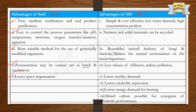The advantages of SSF include being simple and cost-effective, with less water demand, and high concentration products can be recovered. Nutrient-rich solid materials can be recycled, as waste products such as agro-residues are utilized for fermentation, making it very cost-effective. This process resembles the natural habitats of fungi and bacteria, mimicking their natural environment. It also results in less effluent release, reducing pollution, lower sterility demand, lower catabolite repression, and lower energy demand for heating.